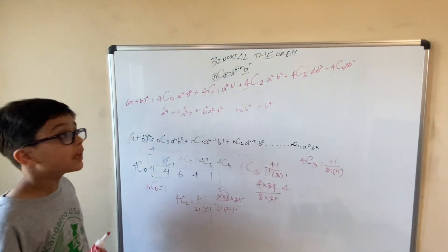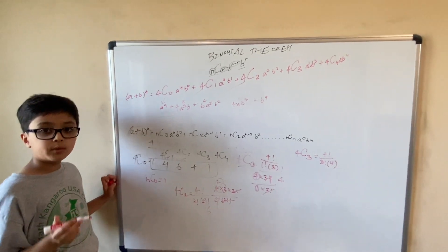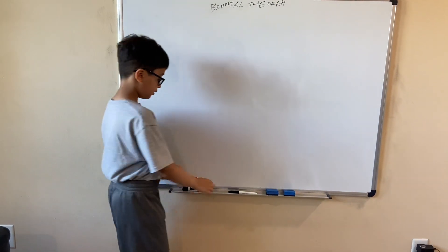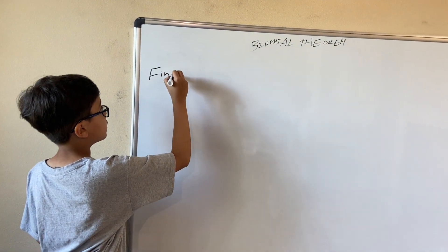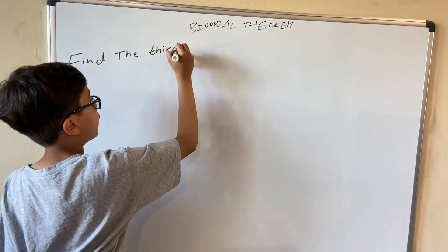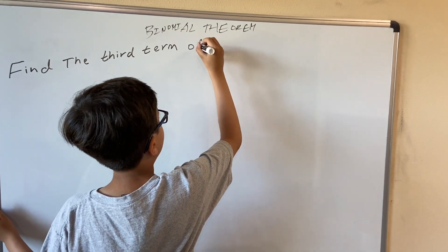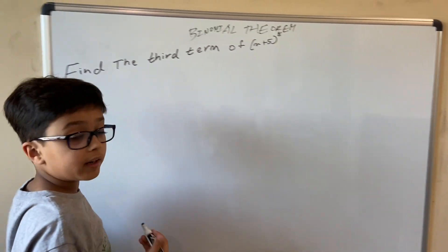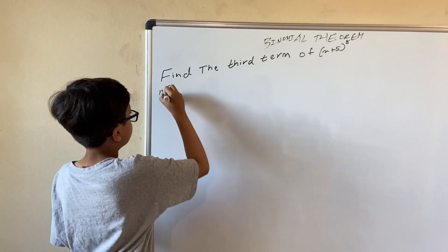This is how we find the expansion of (a + b) to the power 4 with the help of the binomial theorem. Let me clean the board and move on to examples. Let's find the third term of (x + 5) to the power 8. We would need to write 9 lines for Pascal's Triangle, but that's why we're going to use the binomial theorem.